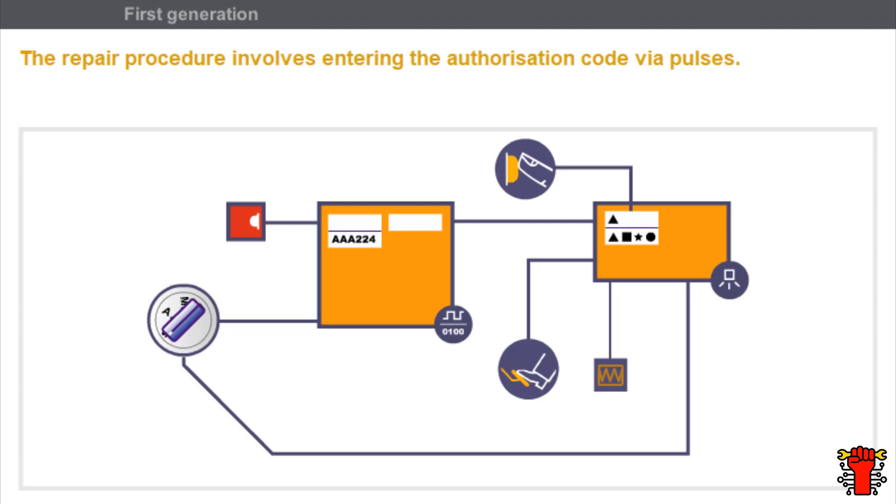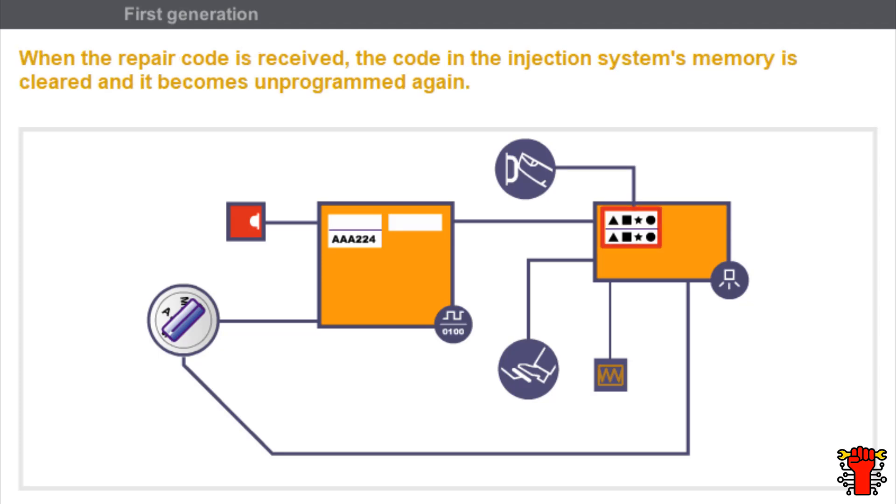The repair procedure is used at the injection system entry. The repair procedure involves entering the authorization code via pulses. It is then possible to start the engine. After a repair code has been received,